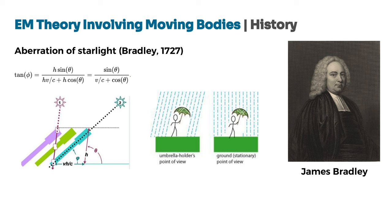The aberration angle phi can be described by the formula shown in the slide, where theta is the true angle of the starlight when the Earth is stationary, v is the velocity of the Earth's motion, and c is the speed of light. The same effect can be observed when running into rain — as one moves, the rain appears to come from an angle, similar to how light from stars appears to change direction due to the Earth's motion. This phenomenon can be explained using either the particle theory of light, as proposed by Newton, or the wave theory of light.